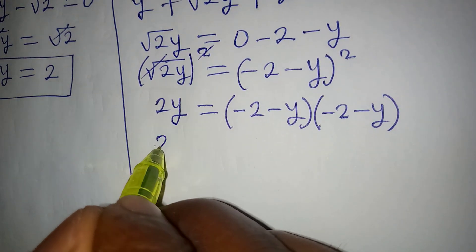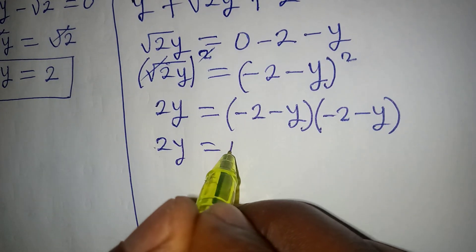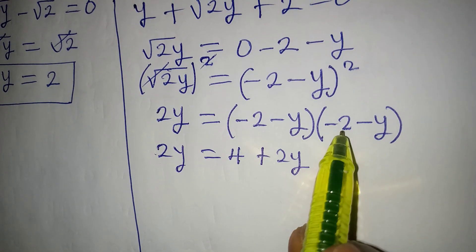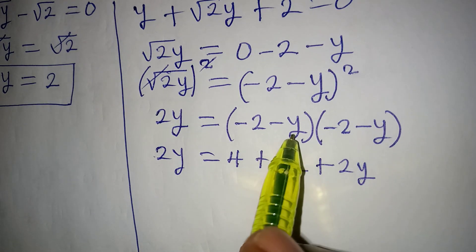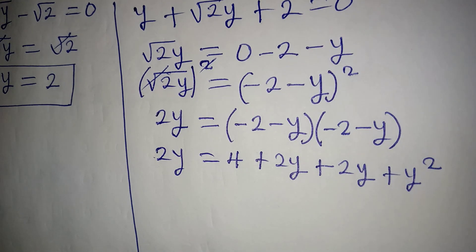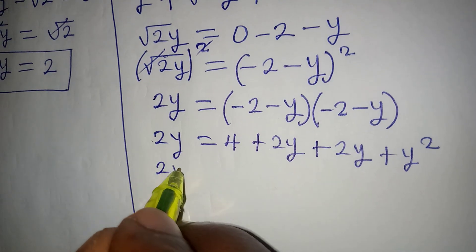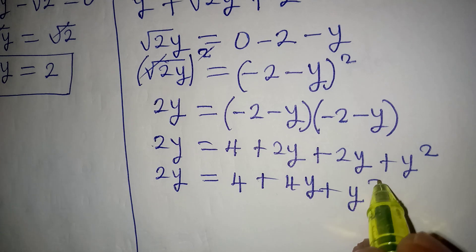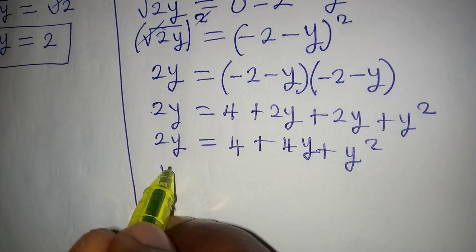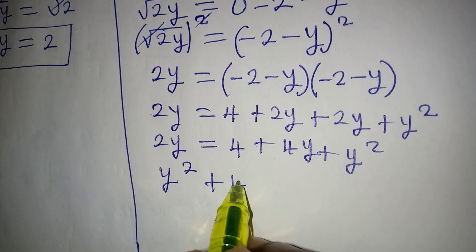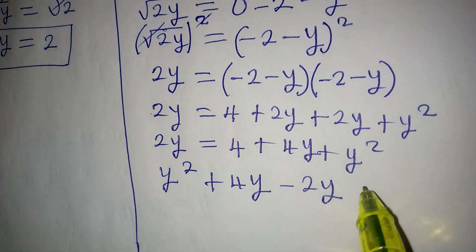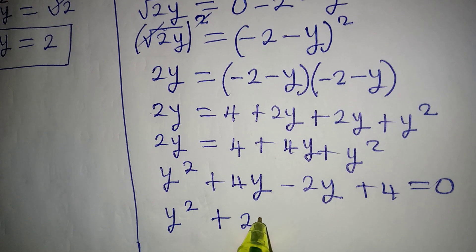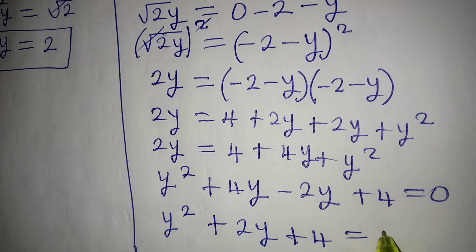Squaring both sides, the square root cancels on the left: 2y equals minus 2 times minus 2, which gives 4; minus 2 times minus y gives plus 2y; minus y times minus 2 gives plus 2y; and minus y times minus y gives plus y squared. So 2y equals 4 plus 4y plus y squared. Rearranging, we have y squared plus 2y plus 4 equals 0.